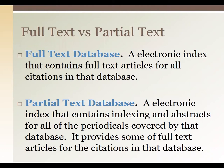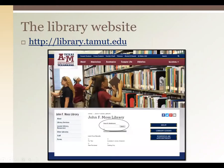Next we're going to look at different types of databases the library has. Some of our databases have the full text of journal articles, but some only contain partial text, like an abstract, summary, or index of articles. I'll show you how to filter those out of your search so you're only looking at articles we have the complete text of. On the library website, you'll see that 'Search Databases' bar in the middle of the page circled in black — that is our Swoop search, and the easiest way to access it is right there on the main page.